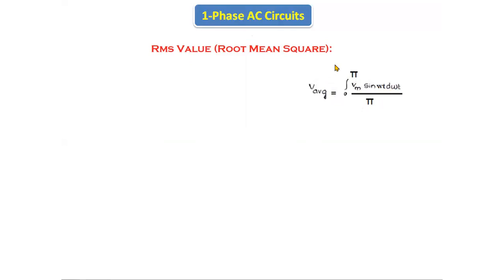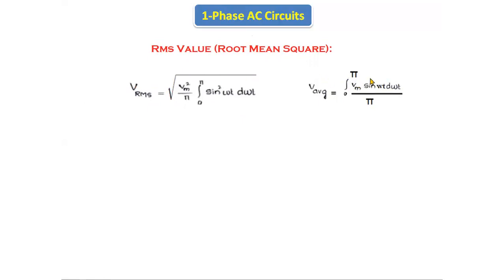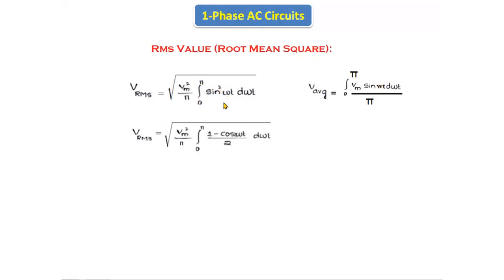This average value is also called the mean value, so applying the root and square gives us the RMS value. V_rms equals the square root of (Vm²/π) × integral from 0 to π of sin²(ωt) dωt. We use the identity sin²(ωt) = (1 − cos(2ωt)) / 2.